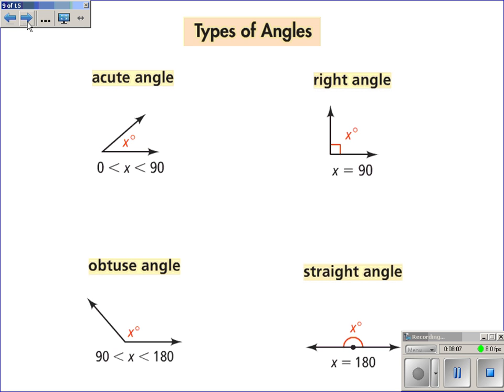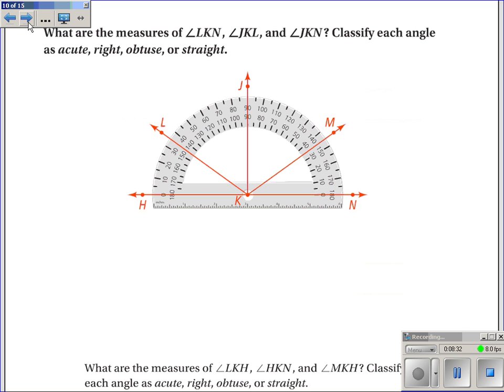Types of angles. You probably have heard of this before, but we have acute angles, where the measure is between zero and 90. A right angle, where the measure is equal to 90. Obtuse angles, where it's between 90 and 180. And straight angles, where the measure is equal to 180. It's called a straight angle because it makes a straight line.